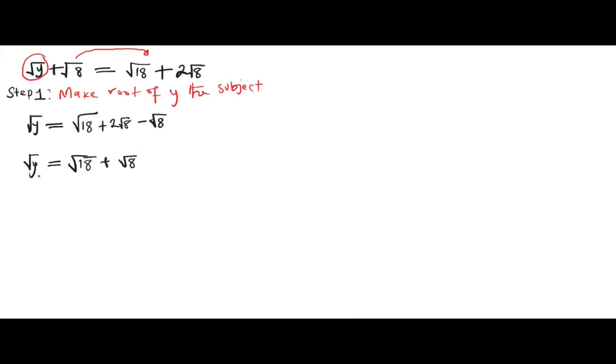So the next thing is for us to eliminate this square root here. So we are going to eliminate it by squaring both sides. So we have (√y)² = (√18 + √8)².